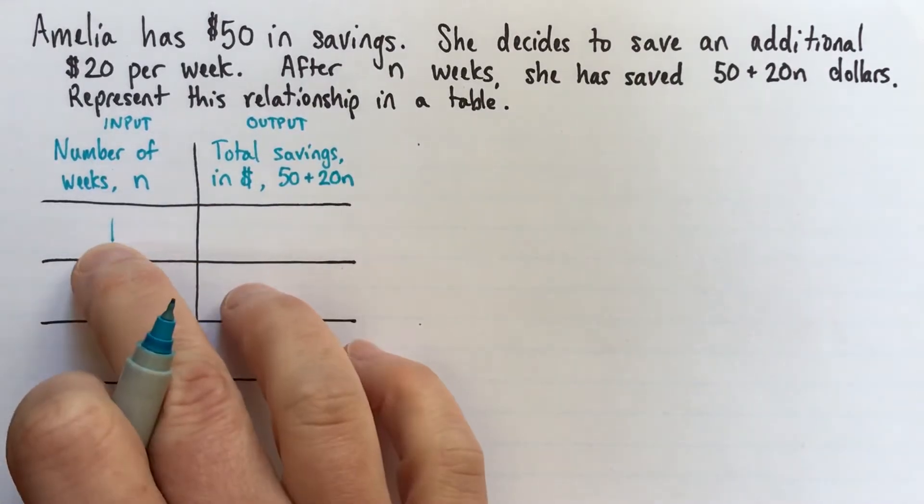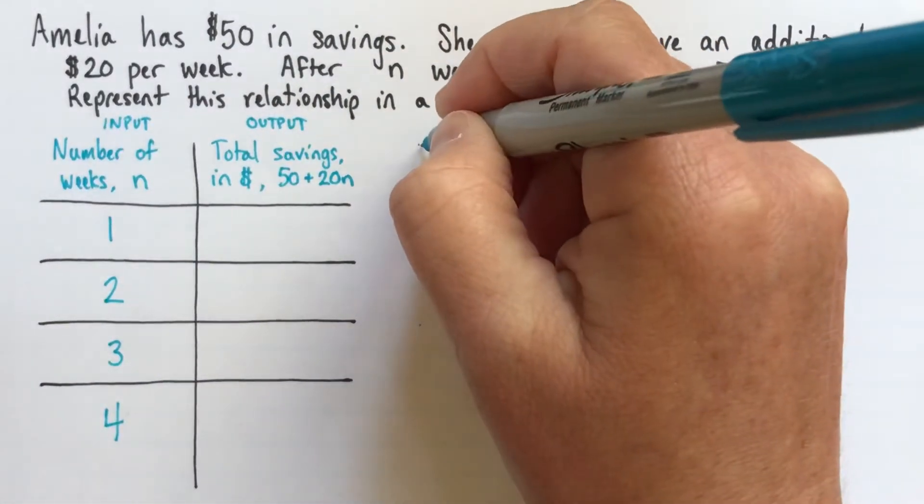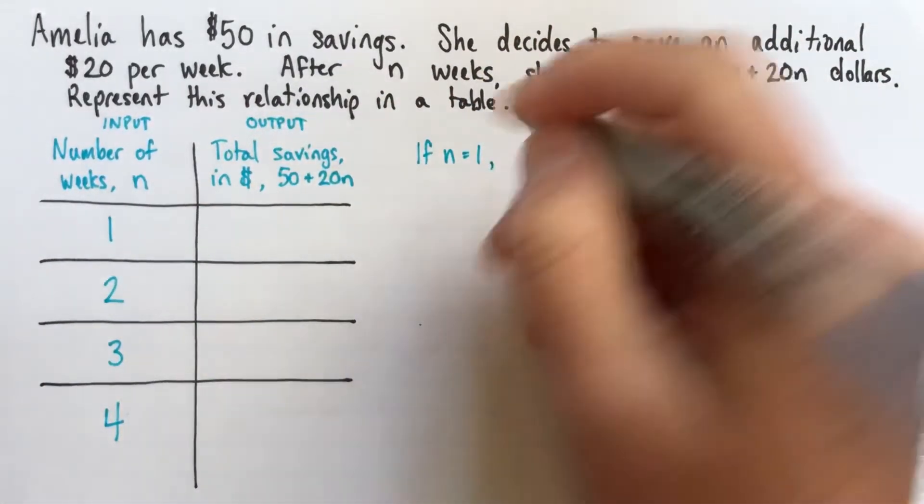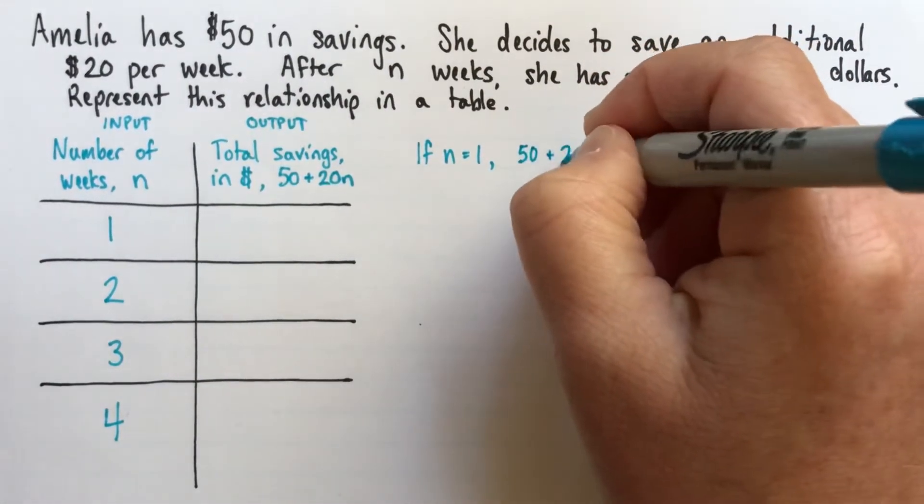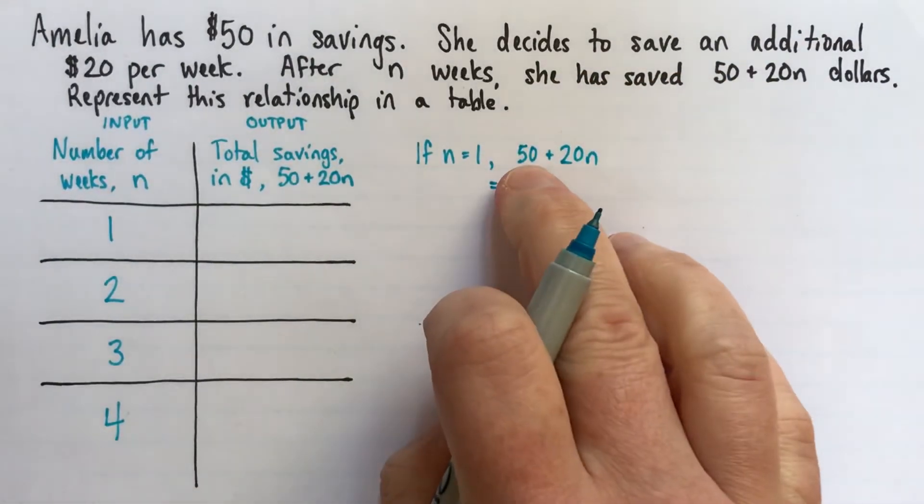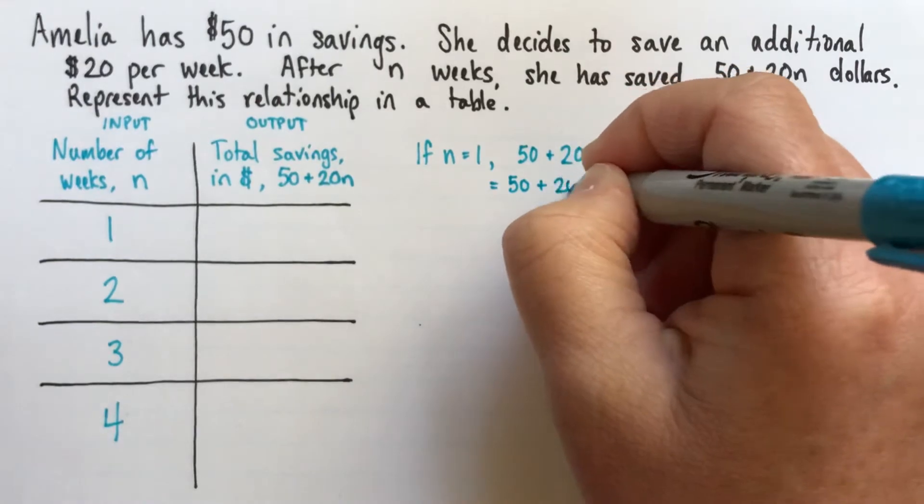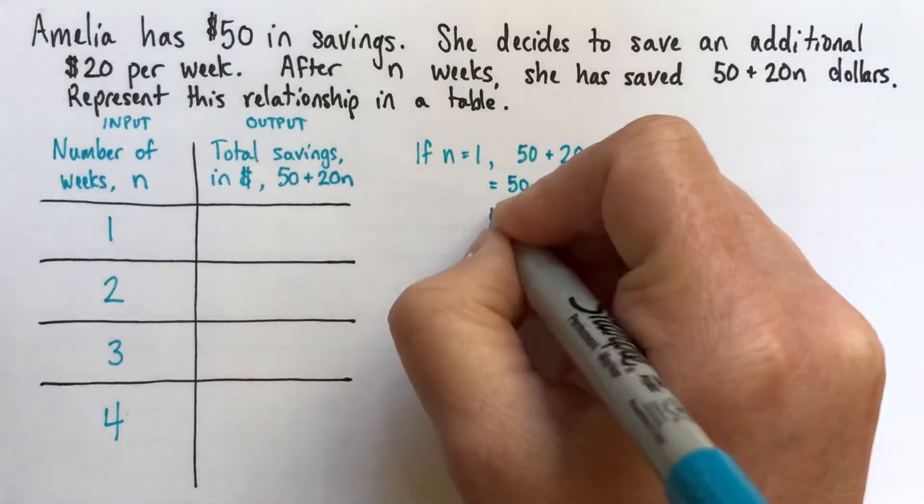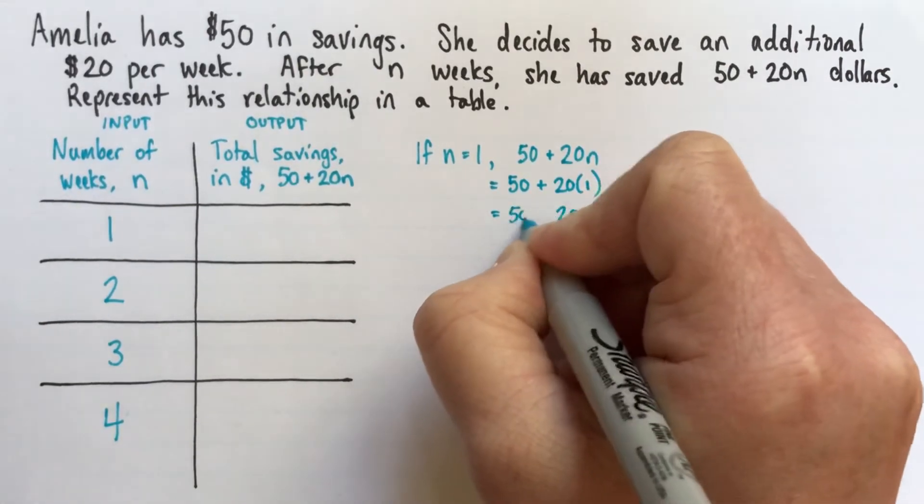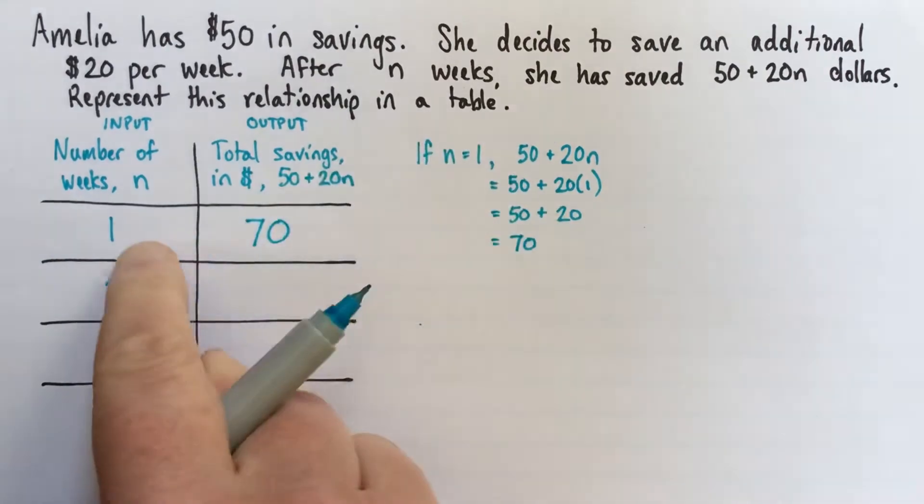And what we're going to do is we're going to substitute our value of n into the expression. And we'll see what we come out with for the total savings. So we'll start here. If n equals 1, I'll do the top row here. What I want to know is what is 50 plus 20n. So I'll put another link to the video, a link to the other video about substituting in case this is tricky for you. But this would be 50 plus 20 times 1. And we'll follow the order of operations here. We're going to do this multiplication first. So that's just 20. But I need to write 50 plus 20. That gives us 70. So after one week, she has $70.